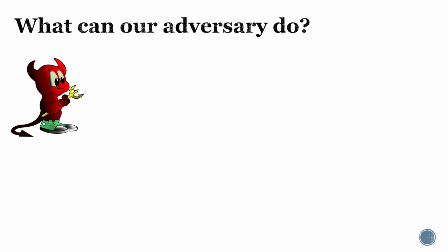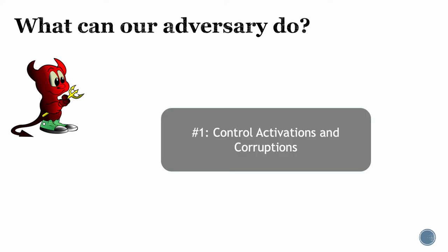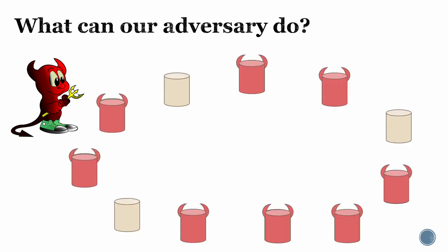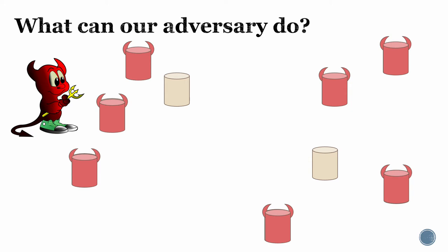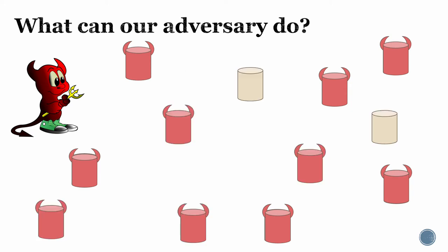We're going to say what the powers of our strong adversary are in our model. First, the adversary can control what we call activations and corruptions. A party is active at some point in time if it's listening for messages at that point. The adversary can adaptively corrupt as many of the active parties as it wants. In one step the adversary can decide on a set of honest parties to be online and a bunch of corrupt parties to be online; in the very next step it can introduce more corrupt parties, remove as many parties as it wants, and between steps it can completely switch the set of online honest parties.